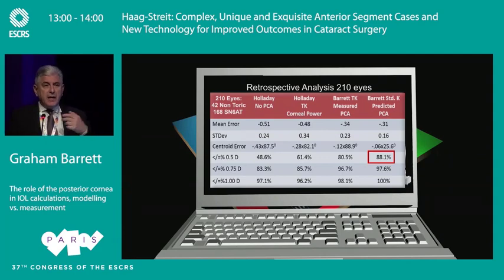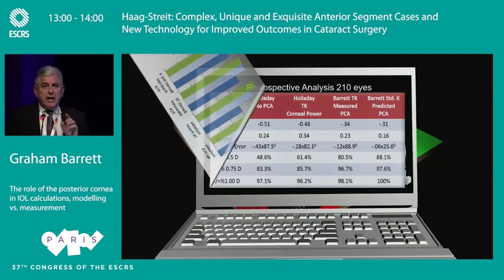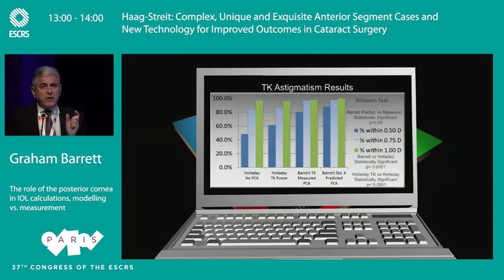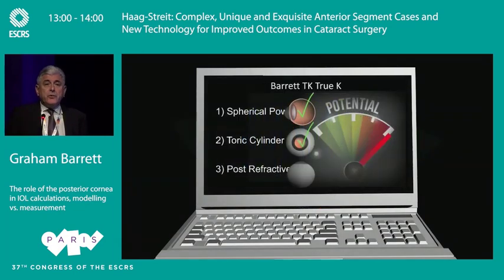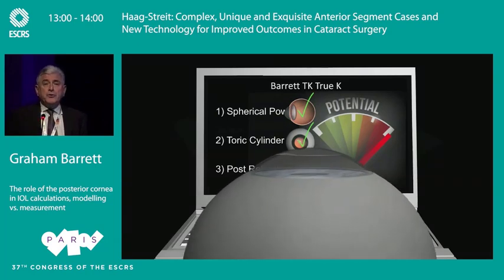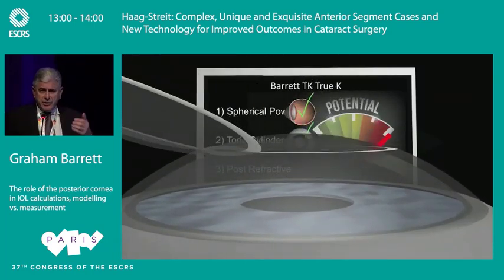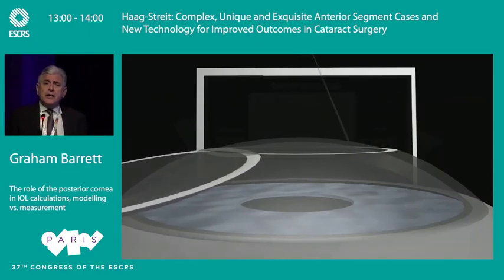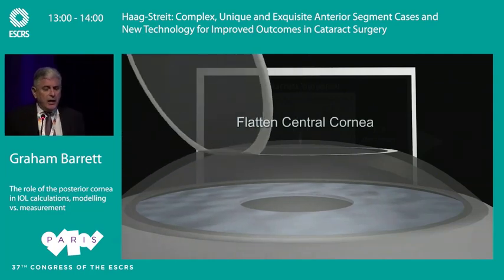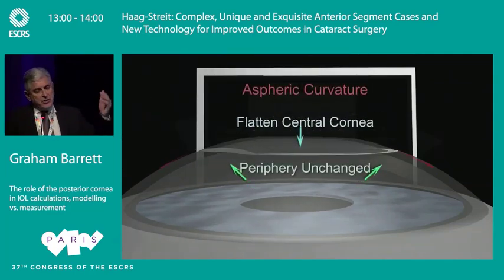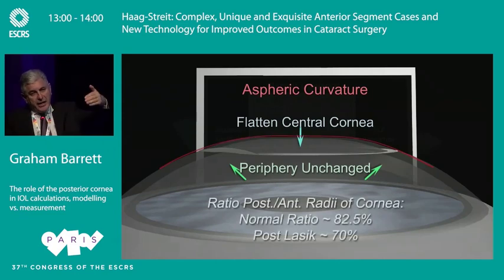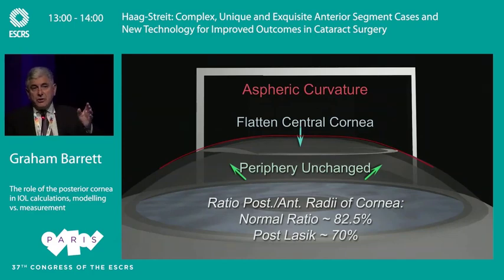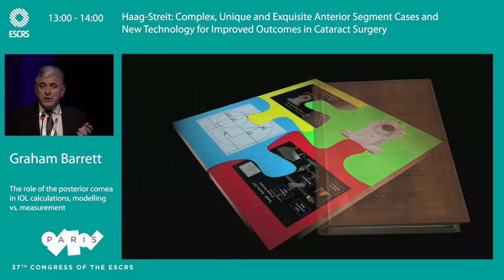Using the Barrett toric calculator with either measured or predicted posterior cornea, both do well: 80.5% and 88% respectively. Similar to the sphere results, measuring the posterior cornea does well, but in conventional eyes I don't see it offering a distinct advantage compared to standard keratometry. The final group to consider are post-refractive patients — perhaps the most challenging area we face today. When a patient has had LASIK, the cornea is flattened but the posterior cornea is unchanged, so the ratio between posterior and anterior radius of curvature has changed, and the assumption that formulae make is no longer true.